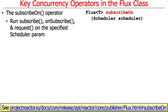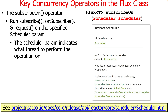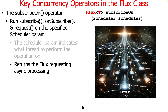So let's start by talking about subscribeOn. What subscribeOn does is it arranges to run the subscribe, on-subscribe, and request operators on the specified scheduler parameter. The scheduler parameter indicates what thread or threads to perform the operator on. There's a lot of things to talk about with schedulers, and subscribeOn returns a flux that requests the asynchronous processing.